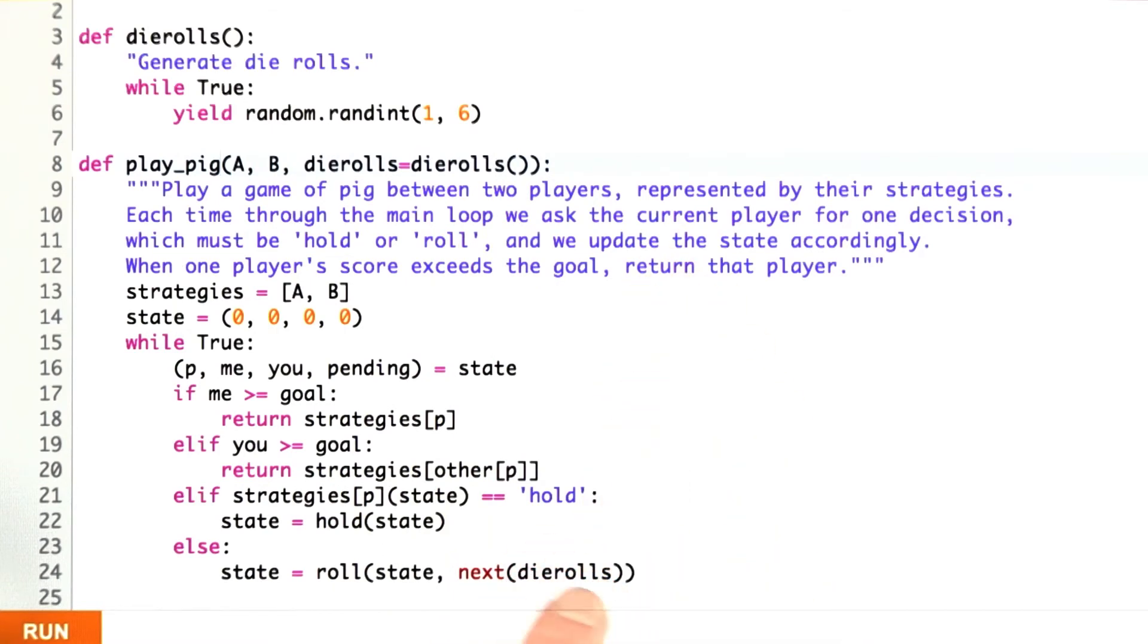Oops, I think I misspoke there. I think I said that die rolls have to be an iterable. Actually, what it has to be is an iterator, such as a generator expression or something else, in order for it to have the next apply to it. Here we go.